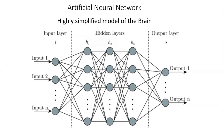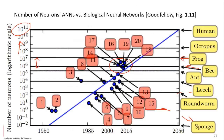A deep neural network has inputs, neurons, and synaptic interconnections passing signals through layers. The depth of the network simply comes from having deeper layers. All these are interconnected and eventually produce an output. The human brain is far more complex — nobody really knows how it works in truth — but artificial neural networks approximate it in a simplified way.